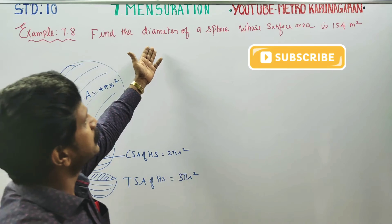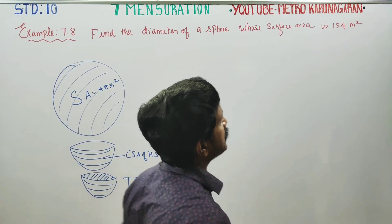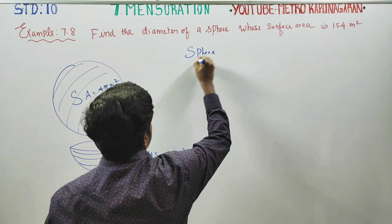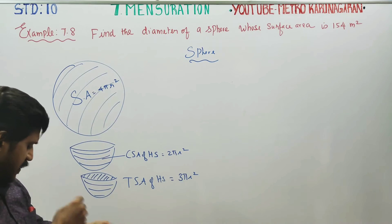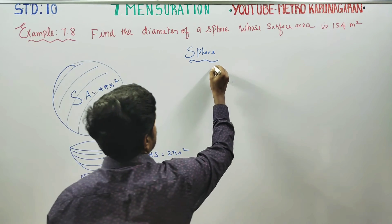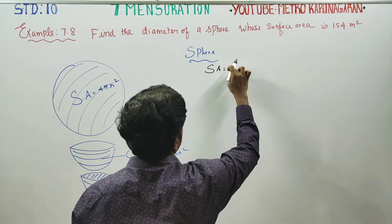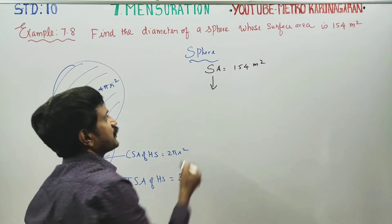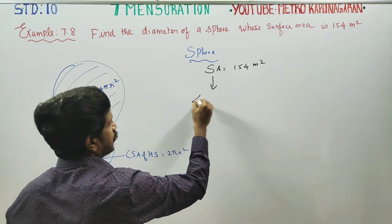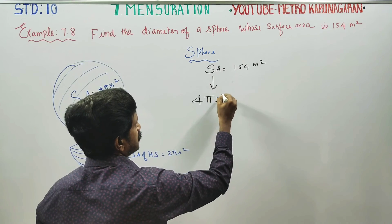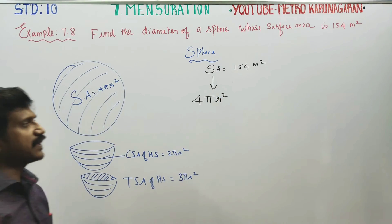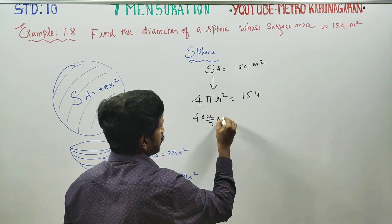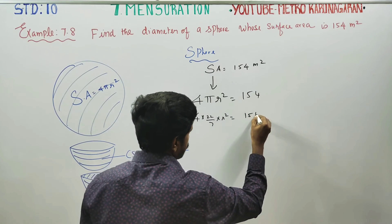To find the diameter of the sphere, the surface area is given as 154. The surface area of a sphere equals 154 m². So we write: 4πr² = 154. Substituting π = 22/7: 4 × (22/7) × r² = 154.